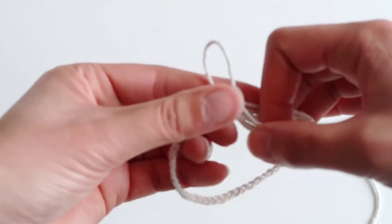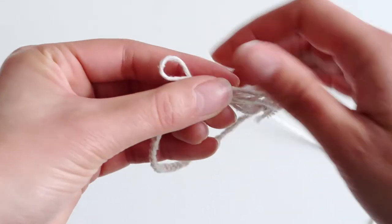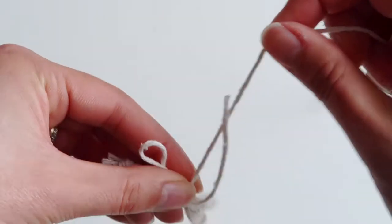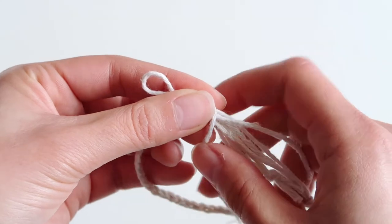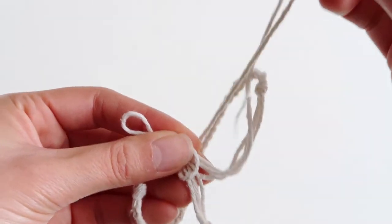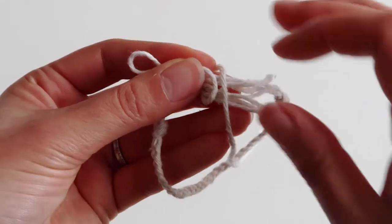Basically you want to try and create this little loop. One side is going to be shorter than the other, and then you place that with the two ends of your bracelet overlapping like so. Place them all together.